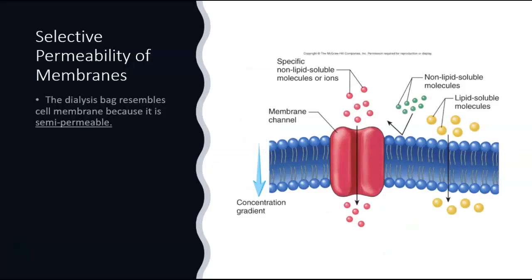Now let's talk about selective permeability of membranes. The dialysis bag is often used for these experiments because it resembles the cell membrane in many ways — it is semi-permeable, meaning it allows certain things to pass through but not everything. That's similar to how your cell membranes work. Of course, the way cell membranes work is much more complicated than the dialysis bag, but it is a good model for experiments.